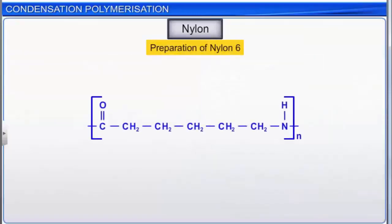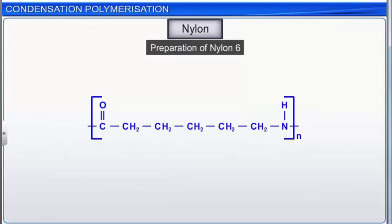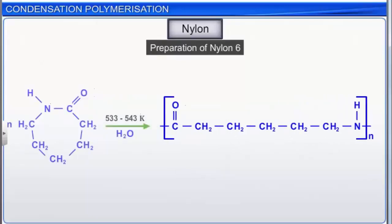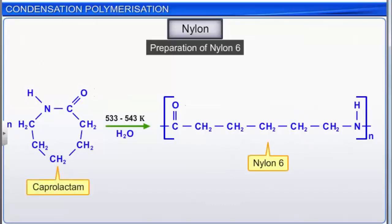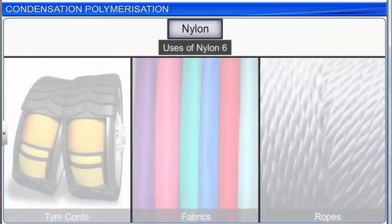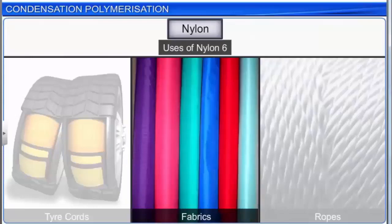Nylon-6 is another synthetic fiber that closely resembles Nylon-6,6. To obtain Nylon-6, caprolactam is subjected to prolonged heating with water at a high temperature of 533 to 543 Kelvin. Nylon-6 is known by its trade name Perlon-L. It is used to make tire cords, fabrics, and ropes.